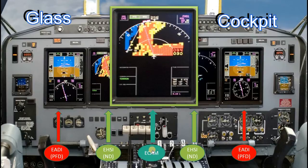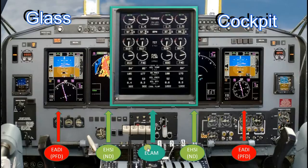The ECAM is the third flight instrument system, which provides information related to the engine. ECAM stands for Engine Centralized Aircraft Monitoring. The ECAM is also called ECAS on different aircraft.